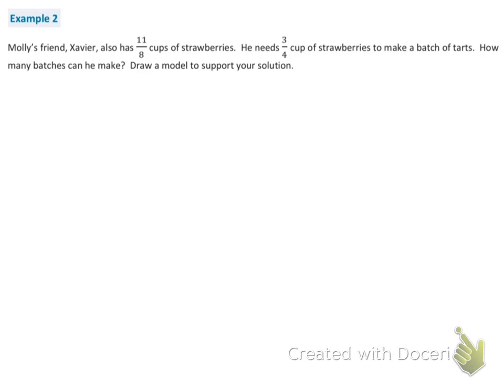I'm going to jump to Example 2 because that's the first example with different denominators. Molly's friend Xavier has 11 eighths cups of strawberries. He needs 3 fourths cup to make a batch of tarts. How many batches can he make? Draw a model to support your solution. With the information provided, I know that I will be dividing 11 eighths by 3 fourths.